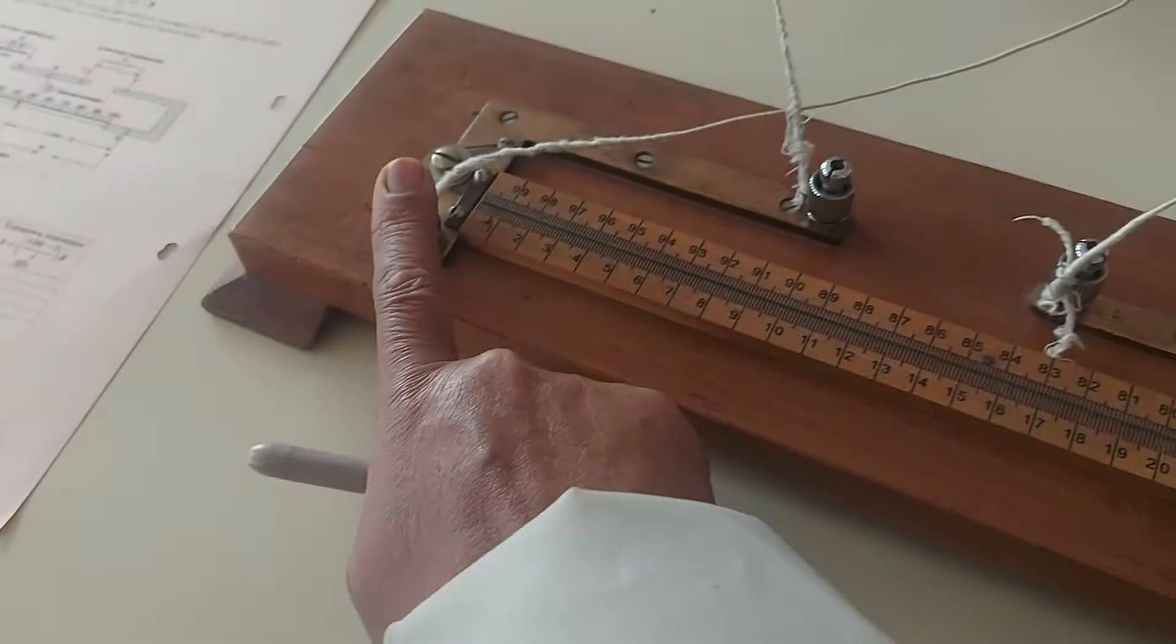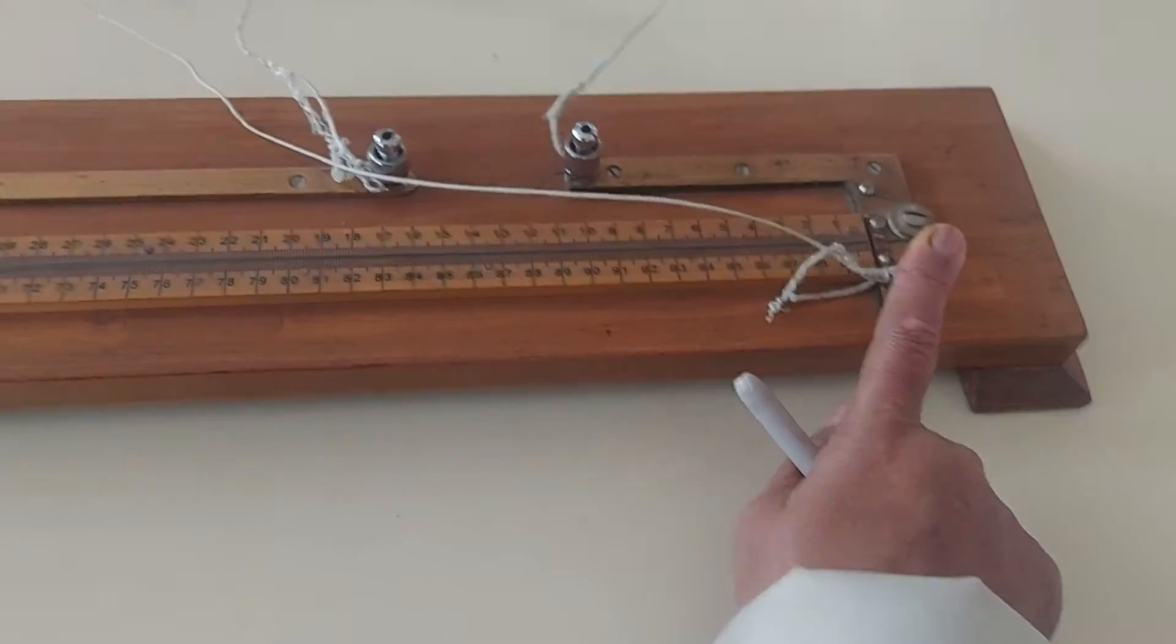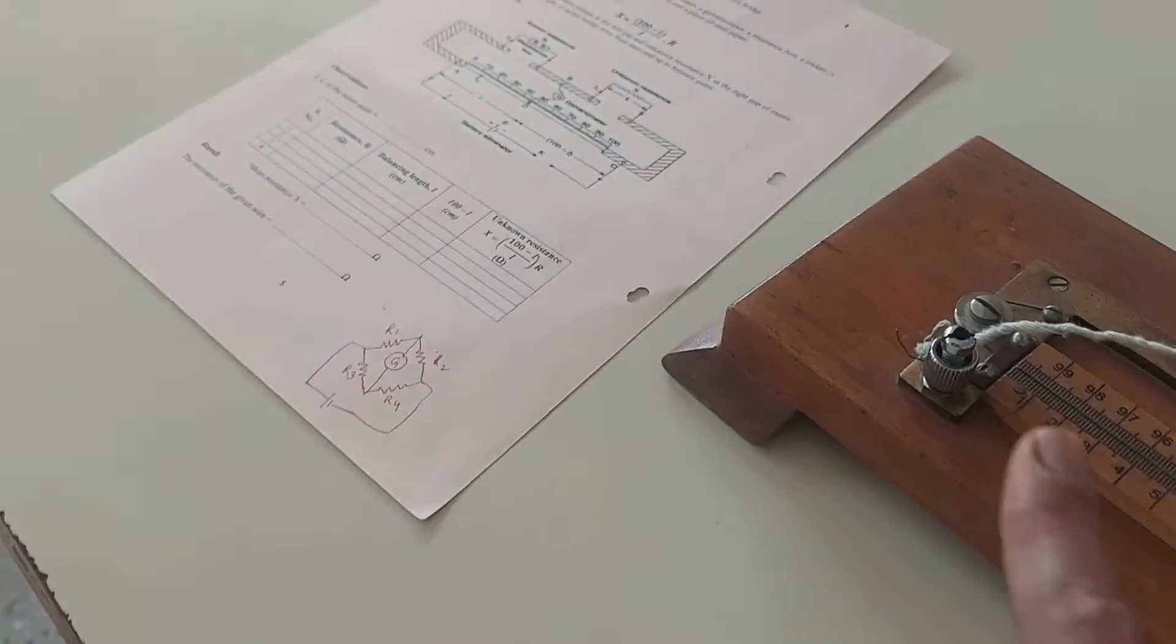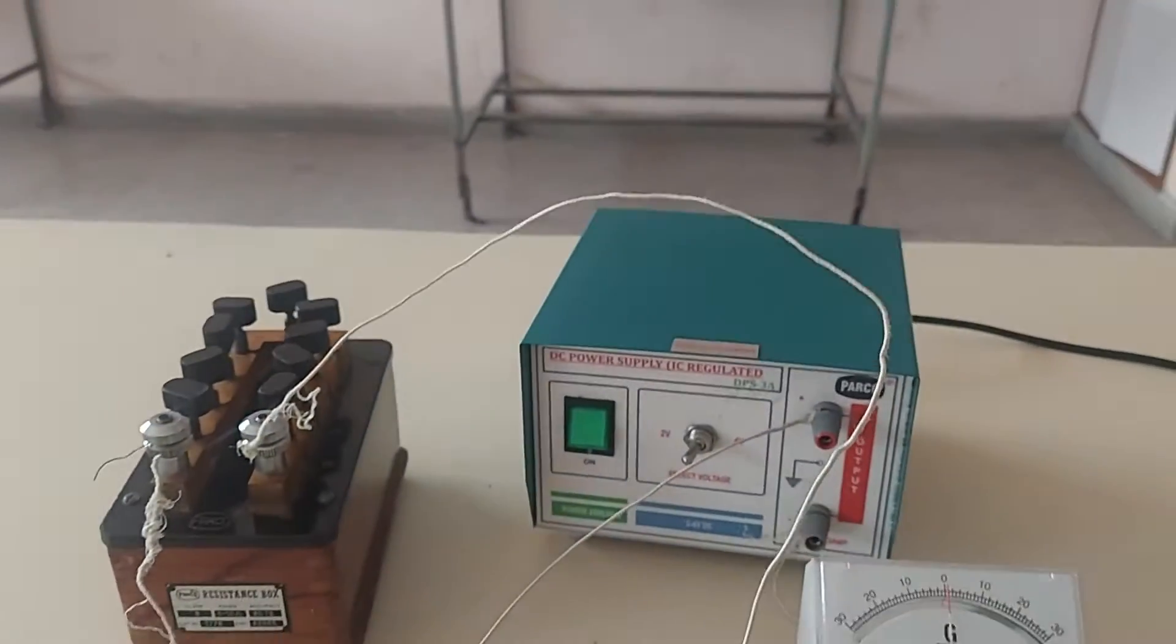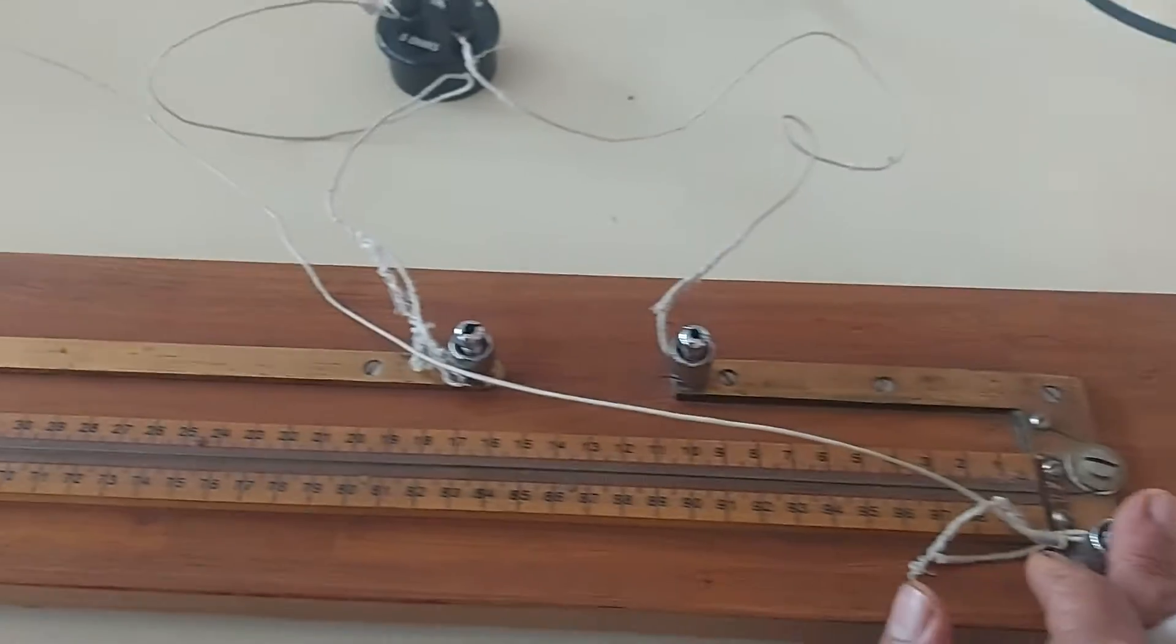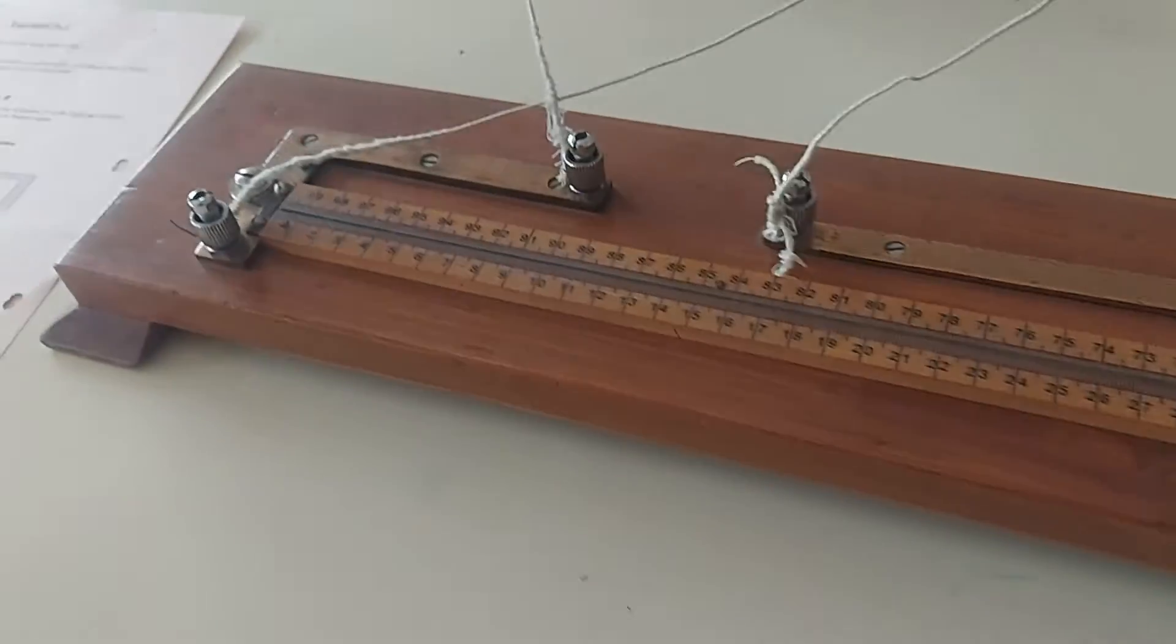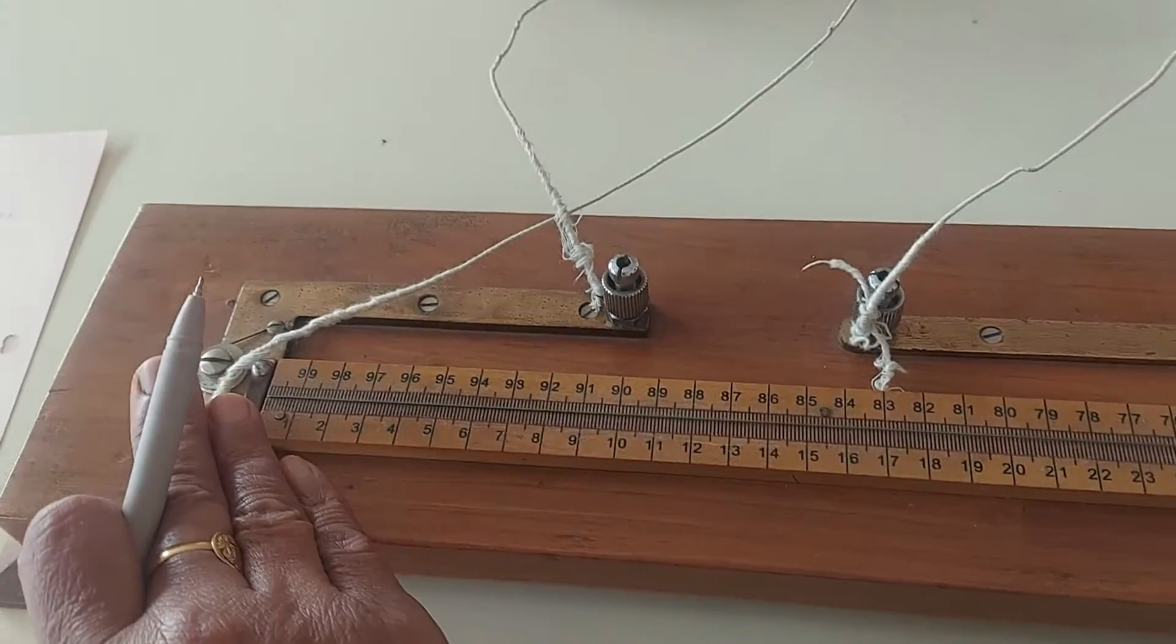The two terminals between which we put the battery is this and this. The end where we put the positive terminal of the supply is considered as 0. The end which is connected to the negative terminal is considered to be 100. So we have to take the values from the 0 end.